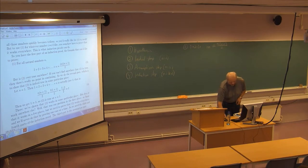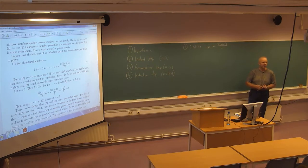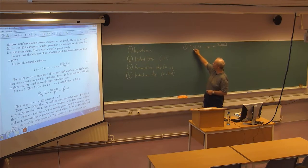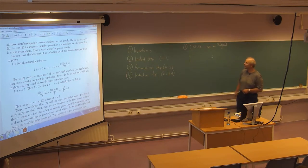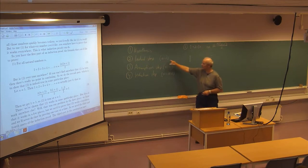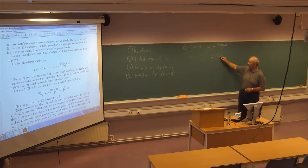Let me just do it on the blackboard. The initial step: n is equal to 1, the lowest number. The sum of the series, which is 1, should be equal to n, which is 1. So 1 multiplied by 1 plus 1, which is 2, divided by 2, which of course is 1.